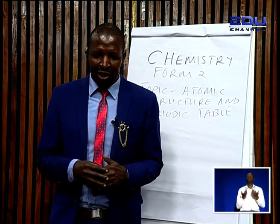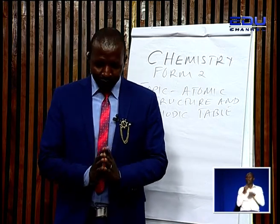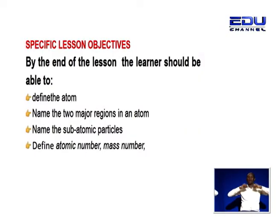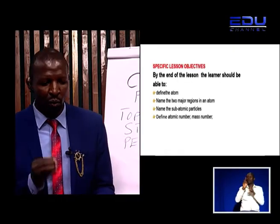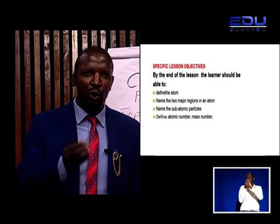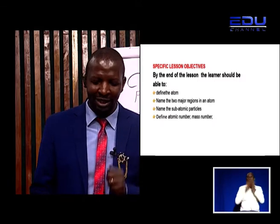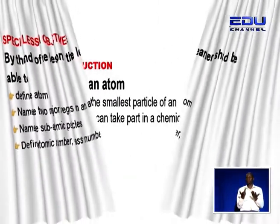Let me repeat the lesson objectives. By the end of the lesson today, the learner should be able to define what is an atom, name the subatomic particles within an atom, and define what is atomic number and what is a mass number.